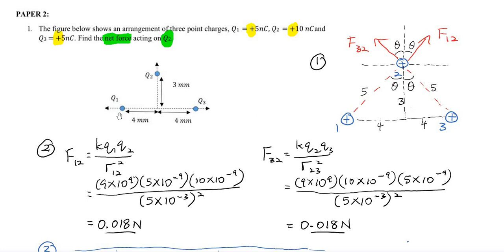So we have Q1, Q2, and Q3. Notice another important thing: the unit. This is nanometers — all charges are in nanometers and the distance is also in nanometers. So make sure you need to convert to SI units. The first step to solve — to find the net force on Q2 — you must redraw the diagram and draw the direction of the forces on Q2 only.